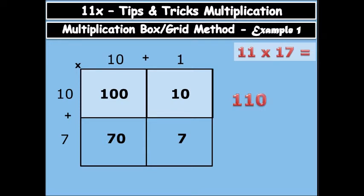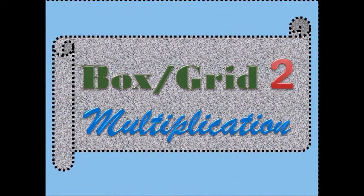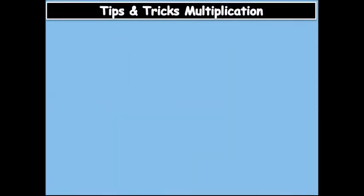So the first row will be 110, and the second row will be 77. That is one of the simplest ways to calculate your multiplication. And then let's go to example 2.